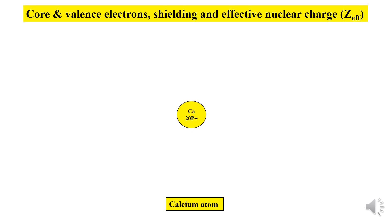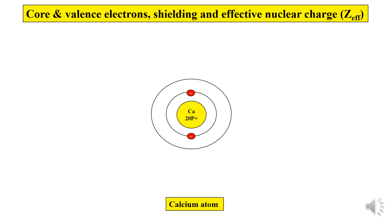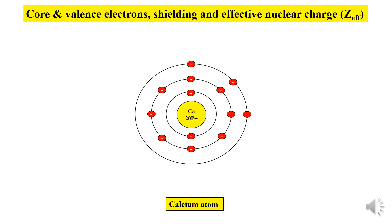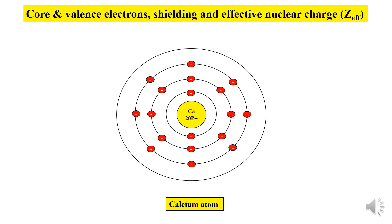The nucleus of the calcium atom contains 20 positively charged protons, and the electrons are arranged around the nucleus in their respective shells or energy levels. The first shell contains 2 electrons, the second shell contains 8 electrons, the third shell contains 8 electrons, and the fourth shell contains only 2 electrons.